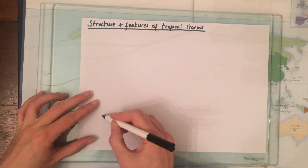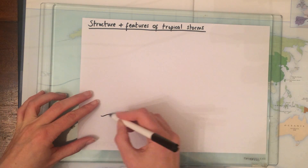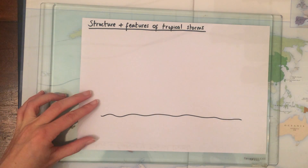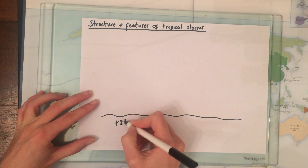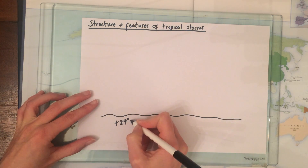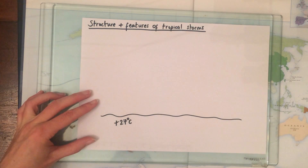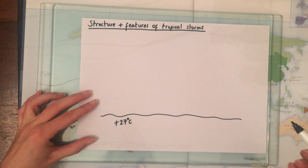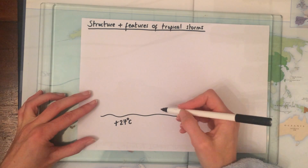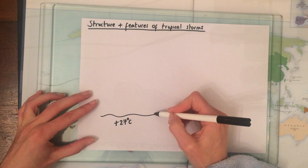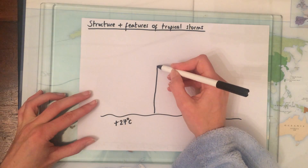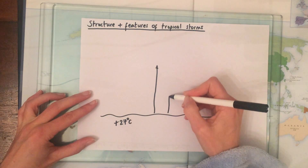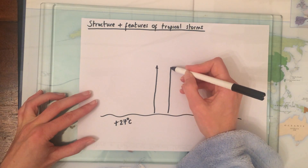Here we have the ocean, and we've already said the ocean needs to be above 27 degrees C. In terms of the structure of our storm, we have got rising air coming up off the surface of the ocean rapidly.